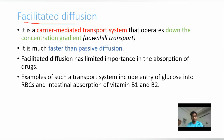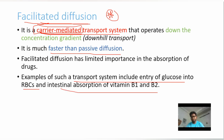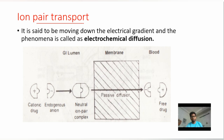Facilitated diffusion is a passive transport process but it is carrier-mediated. A carrier is used but no energy is used. Because carrier molecules are used, it is faster than passive diffusion. Examples include the entry of glucose into RBCs and intestinal absorption of vitamins B1 and B2.